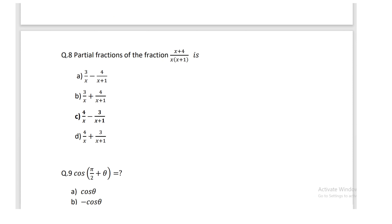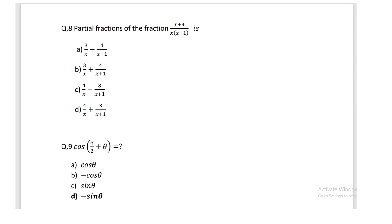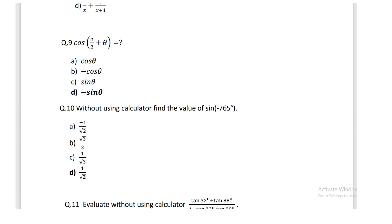Question: find partial fractions of (x + 4)/(x(x + 2)); option C is correct: 4/x − 3/(x + 2). Also, cos(π/2 + θ) = −sin θ. Using this, find the value of sin(−765°); the value is 1/√2.